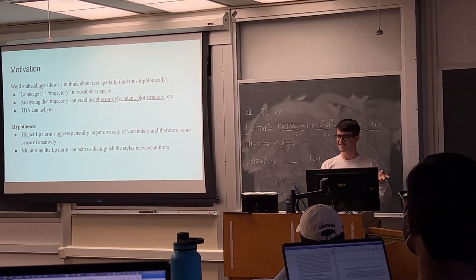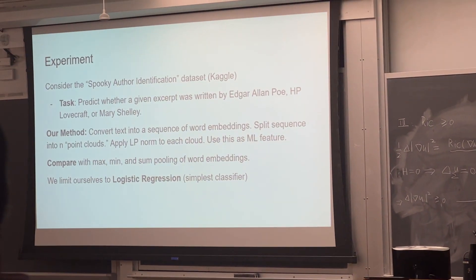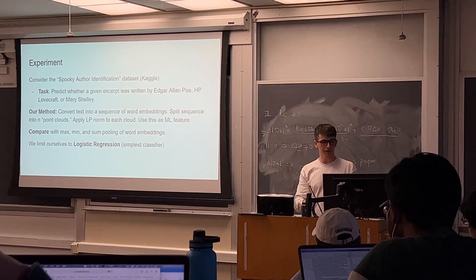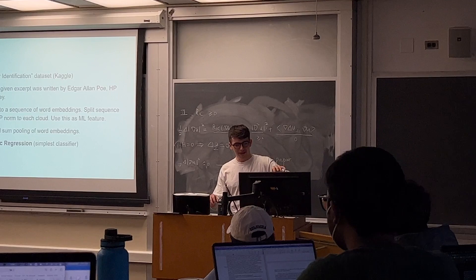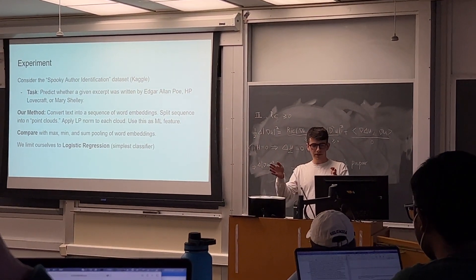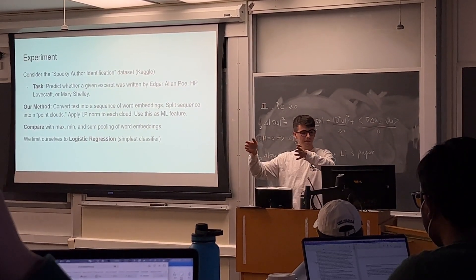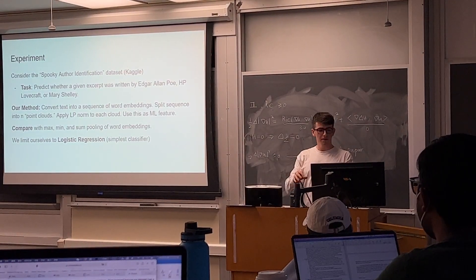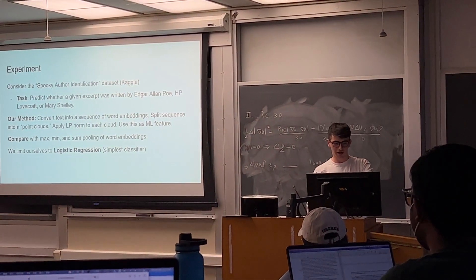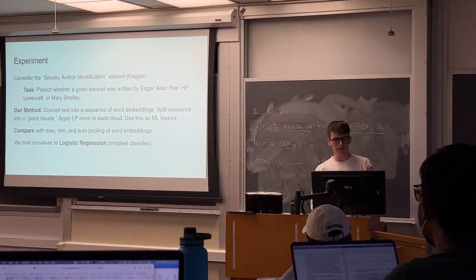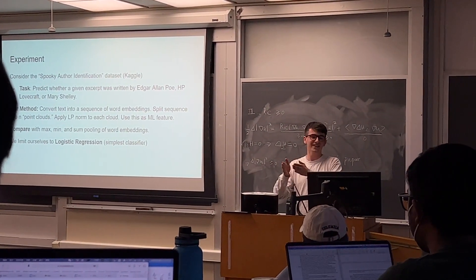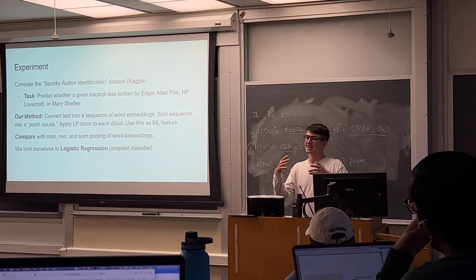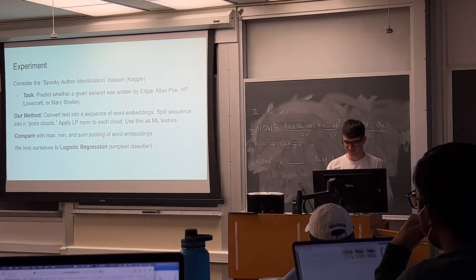We took a very simple spooky author identification dataset—that's what it was called—and the task was to predict whether a given excerpt from a certain poem was written by one of three authors. Our method, compared to other methods, was that we converted the text into a sequence of word embeddings, split the sequence into n point clouds—distinct point clouds over the sequence of the poem or statement. Then we applied the norm to each cloud after doing the whole topological data analysis pipeline, which we went through before. We used this as a feature in a very simple machine learning pipeline—in this case, it was just logistic regression. Then we compared this to some alternatives, which are common in NLP, which is if you have a bunch of vectors and you want to condense it into a smaller amount, you can do max pooling or sum pooling. Min pooling's not really a thing, but I just did it anyway. That is another way of characterizing your data, and that reflects more of those descriptive statistics we talked about earlier in the talk, which TDA beats, hopefully. And it does.